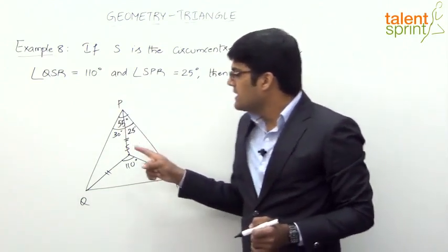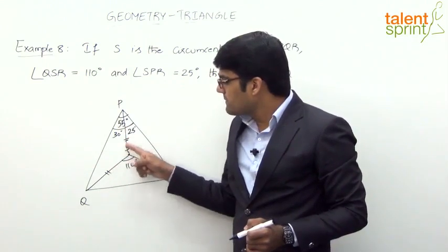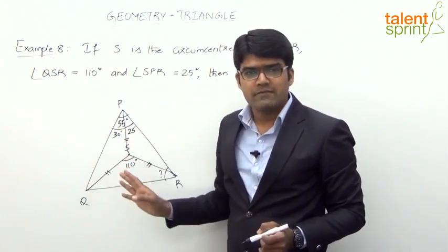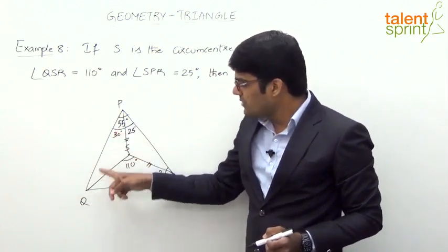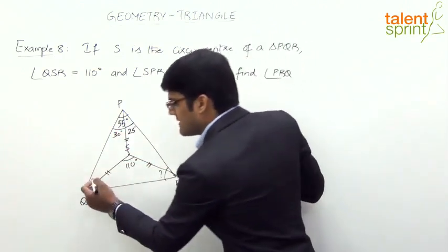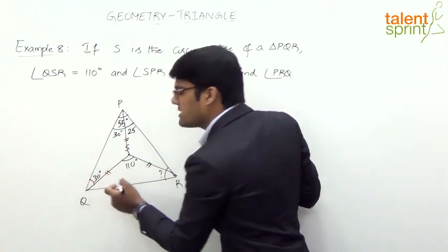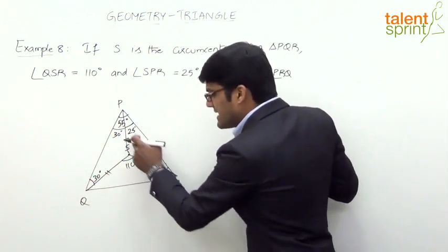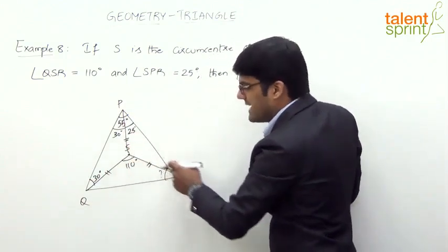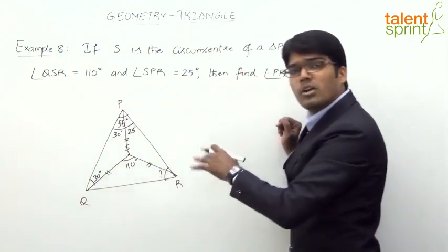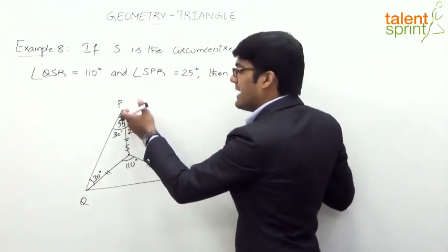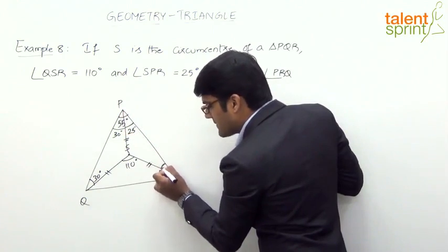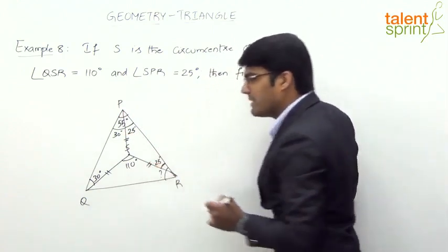Consider triangle SPR: these two sides SP and SR are equal, so their opposite angles must be equal. If angle SPR is 25 degrees, then the opposite angle SRP is also 25 degrees. Similarly, in triangle SPQ, SP equals SQ, so if angle QPR — this part — is 30 degrees, the opposite angle SQP here will also be 30 degrees.